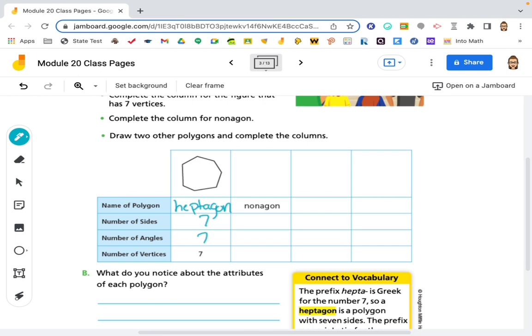Nonagon, it says, has nine sides. So, one, two, three, four, five, six, seven, eight, nine. It has nine angles, nine vertices.